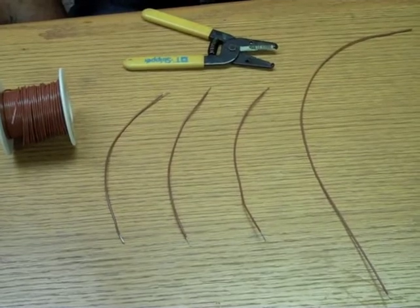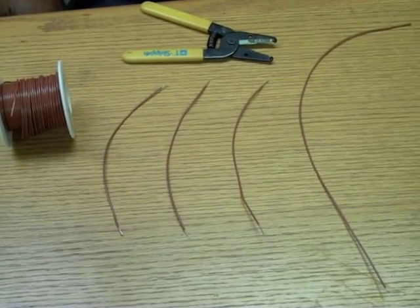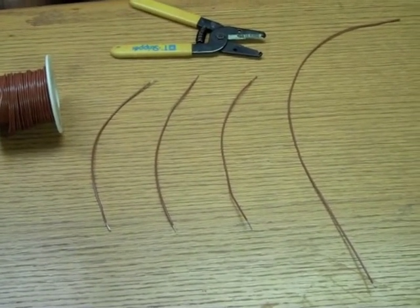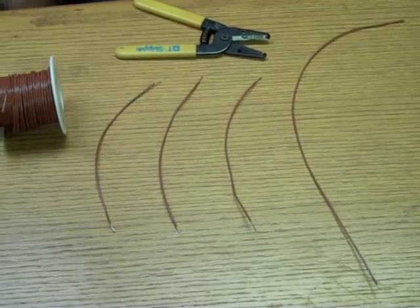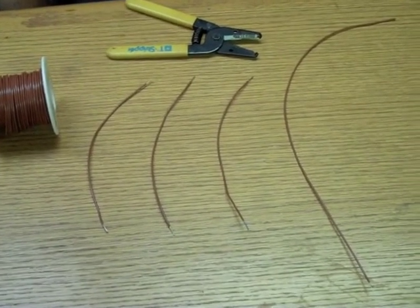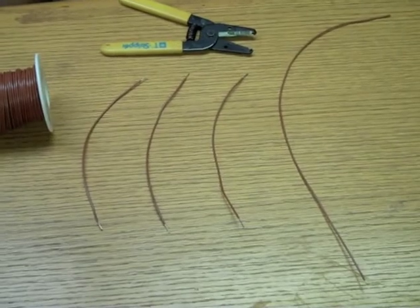Cut one 12 to 18 inch and three 6 to 8 inch pieces of brown wire. Strip approximately a quarter inch of the insulation from one end of the longer wire and both ends of the shorter ones.